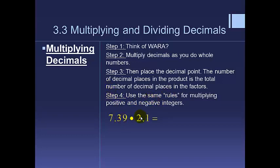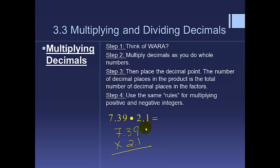This next example is written horizontally, but we'll work it out vertically, which is totally fine. Multiply decimals as you would whole numbers — don't focus on the decimals yet. First, think about a reasonable answer: if I round to 7 and 2, that's about 14. So our goal is around 14. Then: 1 times 9 is 9, 1 times 3 is 3, place a 0 for place value, 2 times 9 is 18, 2 times 3 is 6.